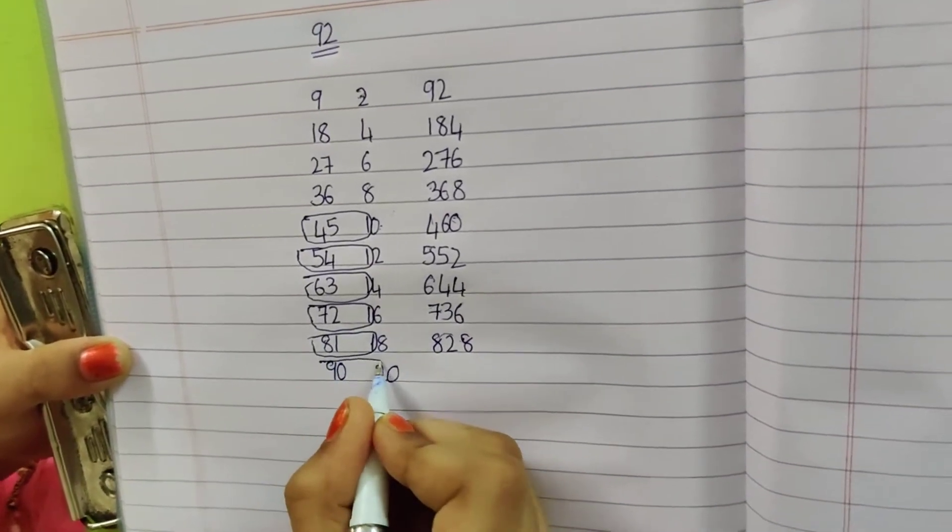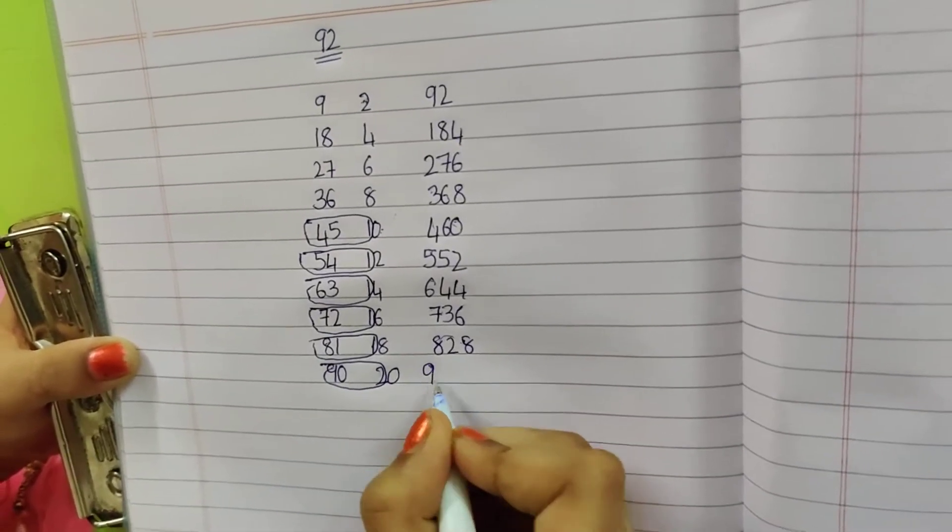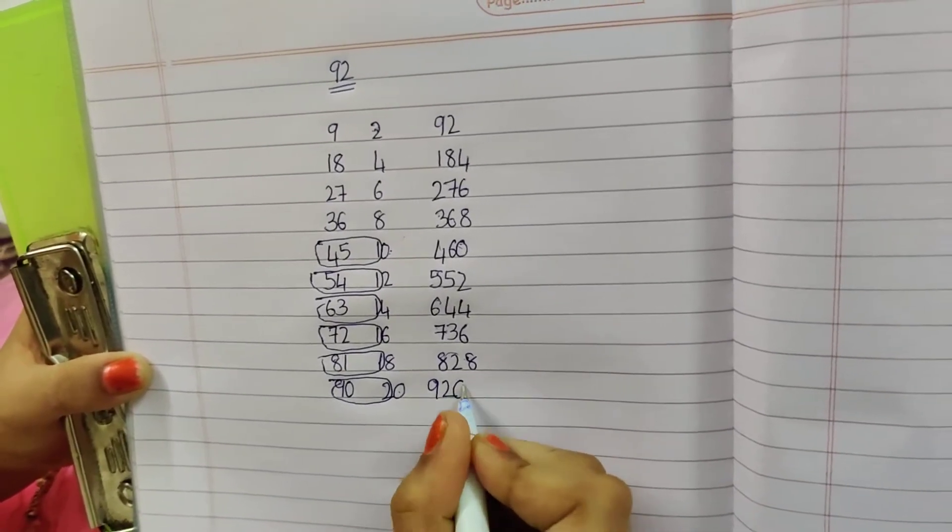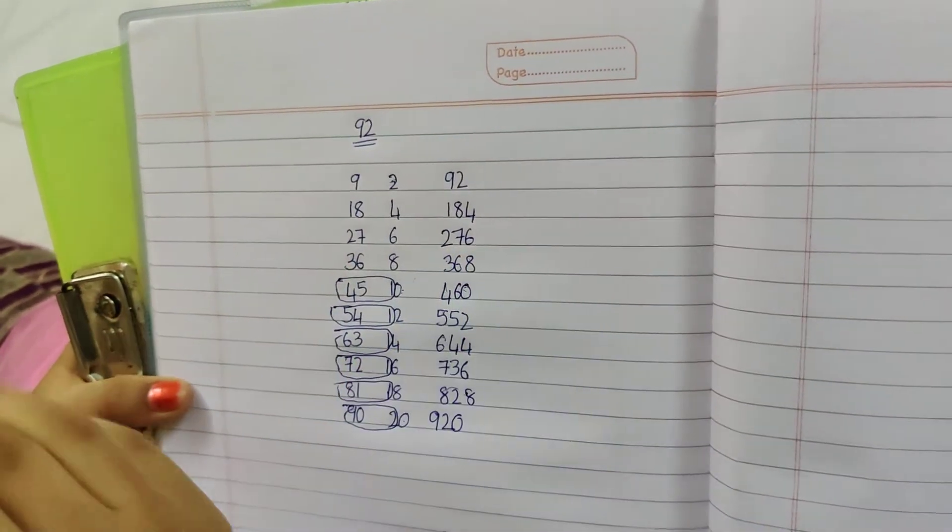Next, 90 plus 2, 92. And write 0. This is 92 table.